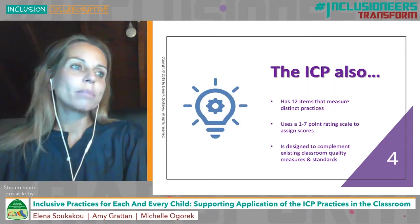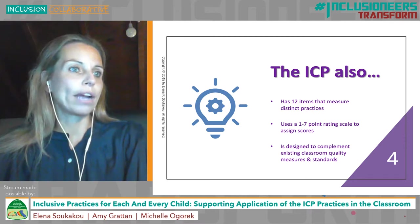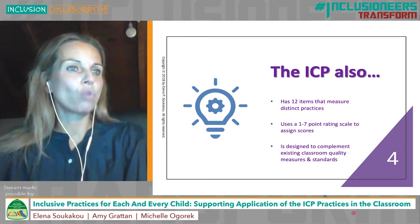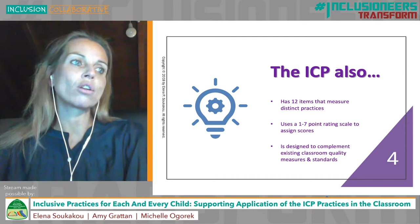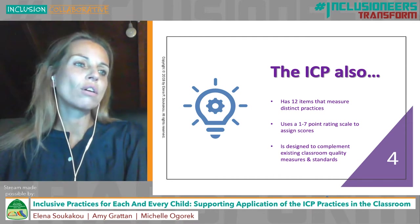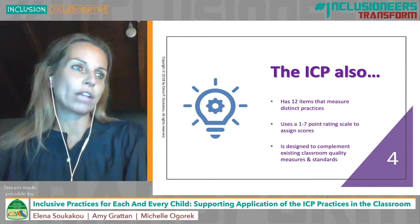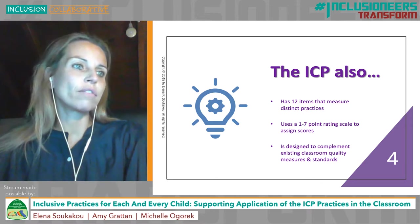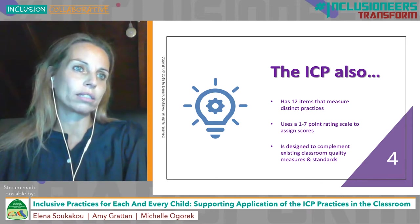The ICP is organized around 12 areas of practice or items that have the strongest research base for supporting the developmental and learning needs of each and every child included in the classroom. It uses a 1 to 7 point rating scale to define quality within each of the 12 practices.